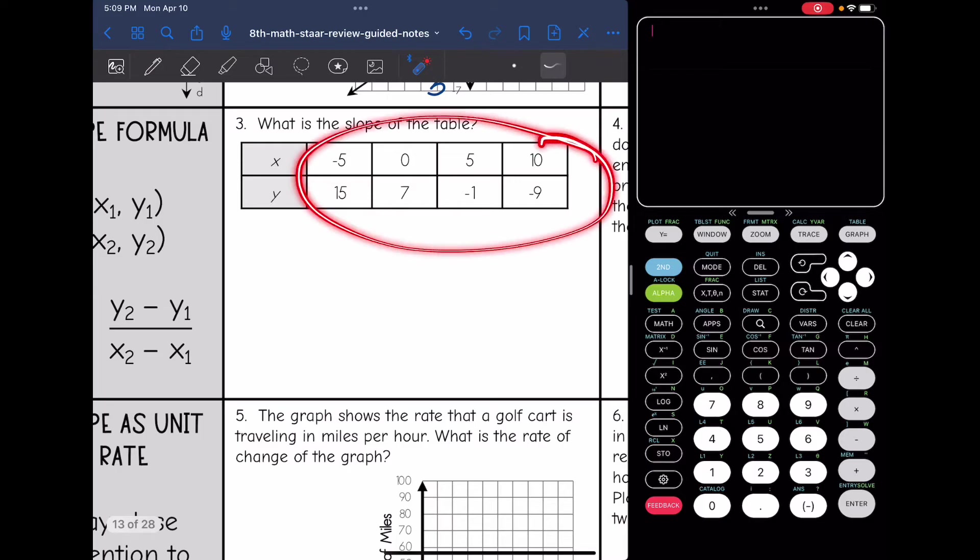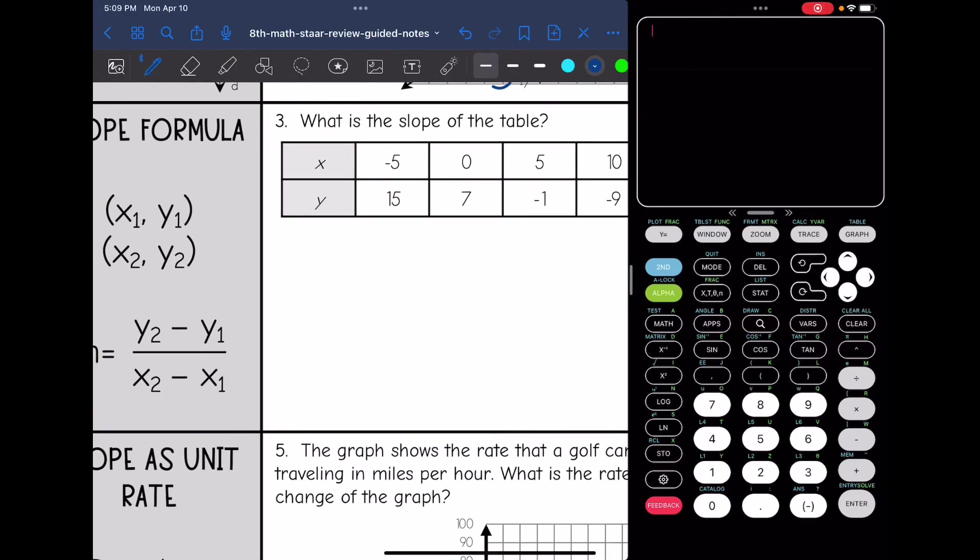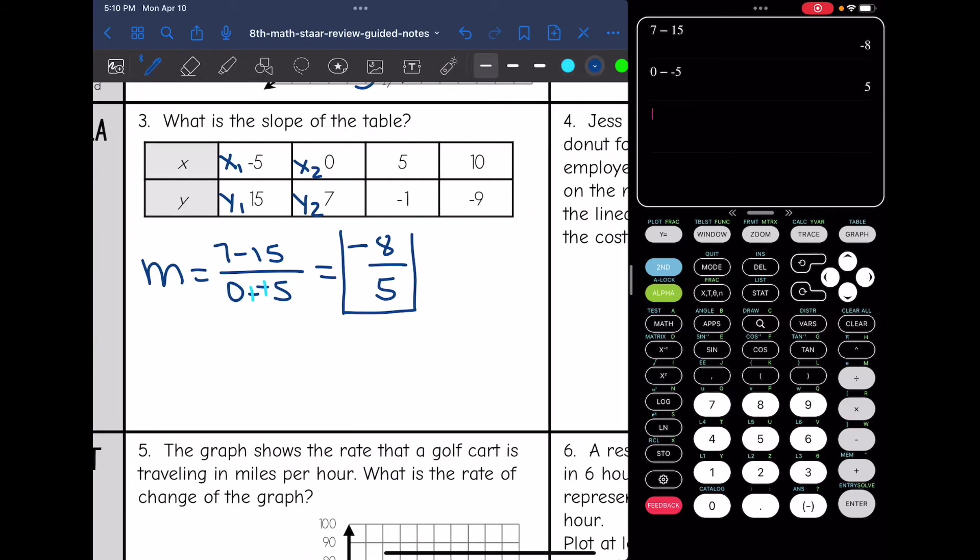So let's look at this first table. I can use any points on the table. You choose the points that are going to be easiest for you. I'm just going to choose the first two points, and I'm going to label them as x1, y1, and x2 and y2. And now I'm going to plug into slope formula. I'm going to do y2 minus y1, so 7 minus 15, all over x2 minus x1, so 0 minus negative 5. And now I'm going to do the numerator and then the denominator separately. So 7 minus 15 is negative 8. 0 minus negative 5, you can type that into your calculator, it's 5. You also could have remembered that minus and negative is the same thing as plus a positive, and 0 plus 5 is 5. So our slope on this table is negative 8 fifths.